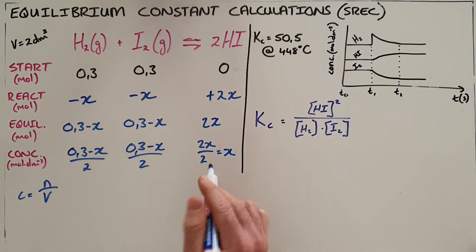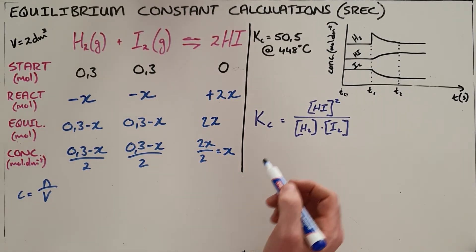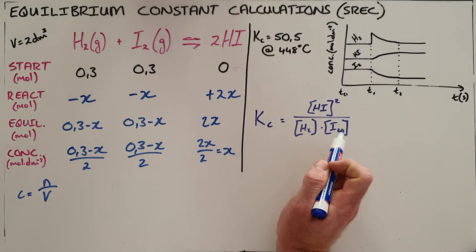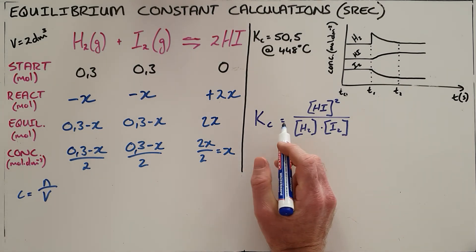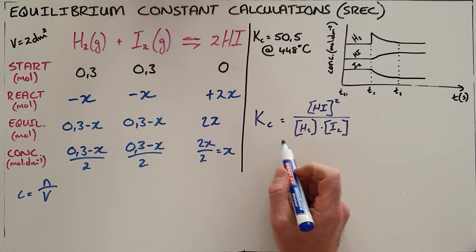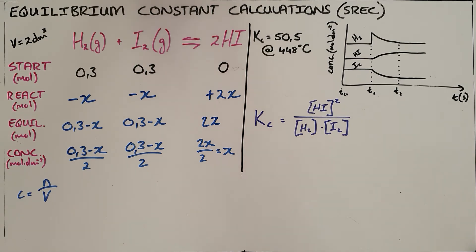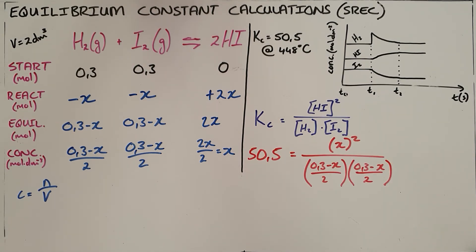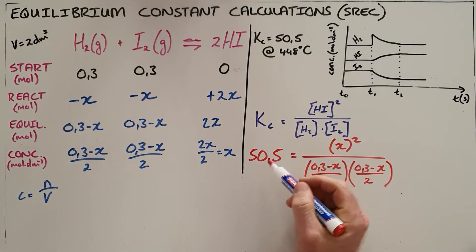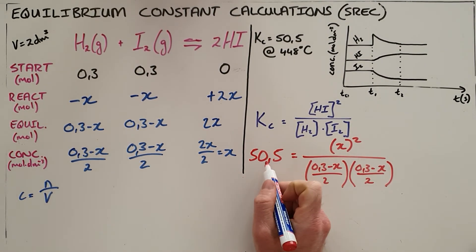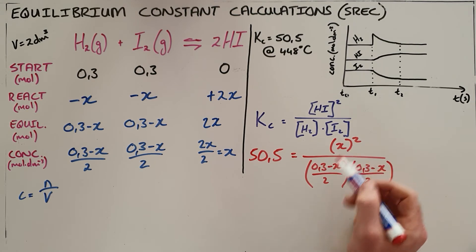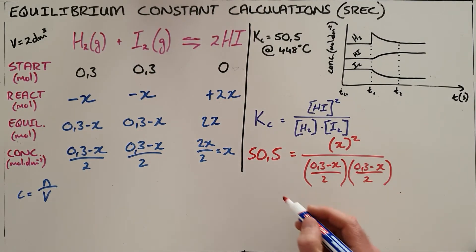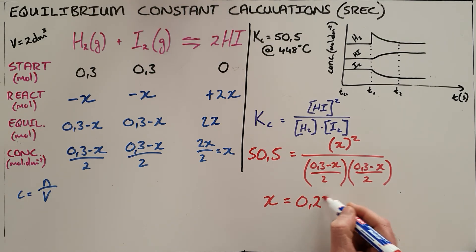Now we have a term for each concentration and can use our Kc expression. We substitute in all the values: Kc equals 50.5, and by substituting the concentration terms and doing the algebra, we find that X equals 0.23.